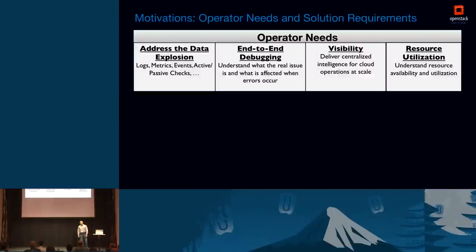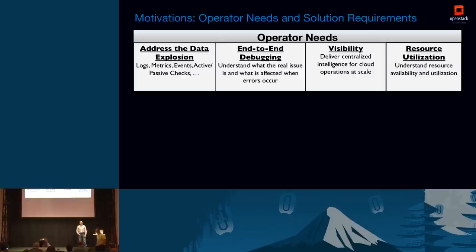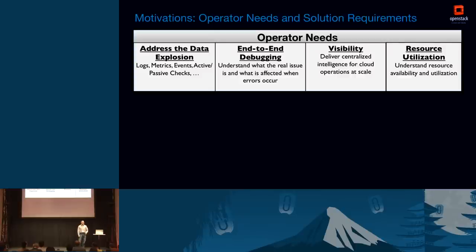The motivations really center on operator needs. Operators handling modern clouds face a lot of stress with the amount of data they need to handle — not just metrics and events, but also logs, checks, and all the data required to evaluate the status and health of the cloud they're managing. They need to do end-to-end debugging; it's not enough to see an alarm pop up in red. You need to dig deeper to understand what really caused the problem and how to fix it. They also need visibility into everything happening in the cloud at a given time, and crucially, they need to understand resource utilization — current capacity, spare capacity, how to address requirements for more capacity at any given time.